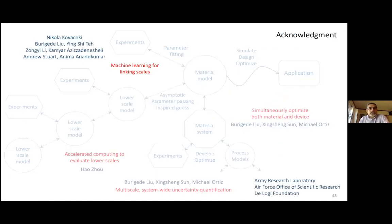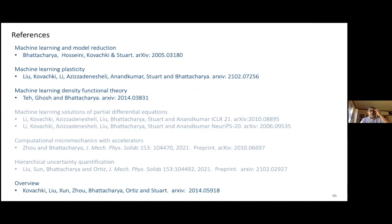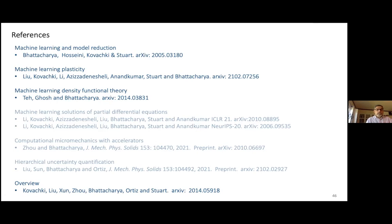So that's all I had to say. Much of the work I talked about is really the work of Nick Kovachki on the math theory, Burigede Liu on plasticity, and Yingshi Teh on the DFT. Virtually everything I told you is on the arXiv. One line of work I did not talk about is with Zongyi Li, a student of Anandkumar, exploring other architectures—in one case a graph neural network and in another a Fourier neural operator. We're learning that different problems work well with different architectures, and it would be great to have better mathematical understanding of all of this.